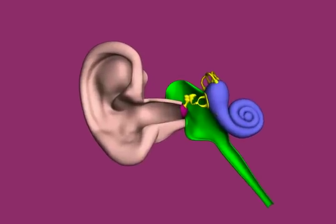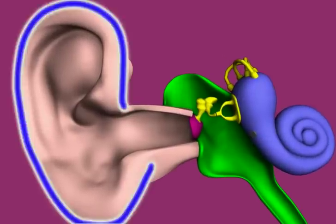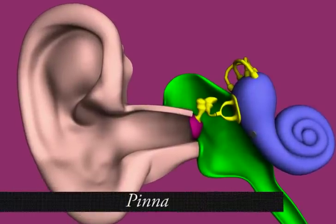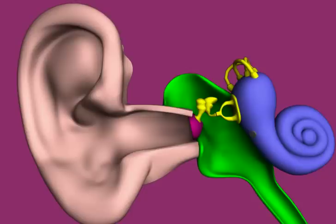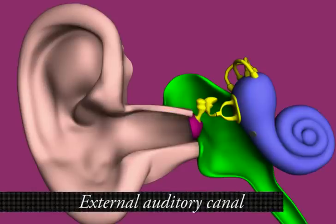This is our ear. The outer part of the ear is called the pinna. The shape of the outer part of the ear is like a tunnel. This is a canal called the external auditory canal.